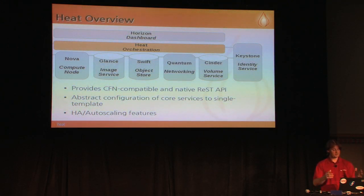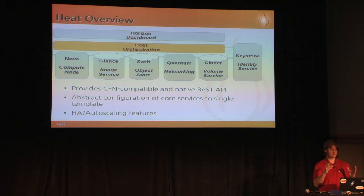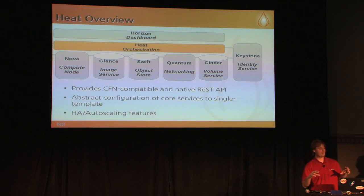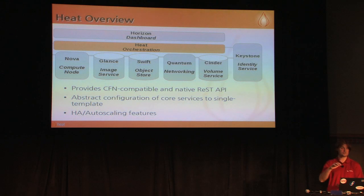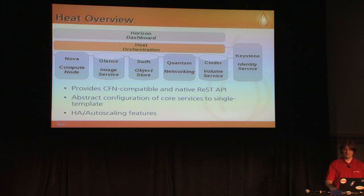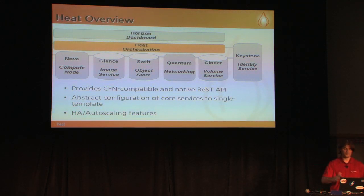You have an abstract configuration of all the core services into a single template which can be treated just like source code, and you can deploy your infrastructure via this template. Those templates can also be nested, which is a really powerful feature — you can build up building blocks of your infrastructure and layer them, composing your templates such that you don't need one enormous template. You can treat things in a modular way and start treating your cloud deployments a lot more like code. You can version the templates you're producing.